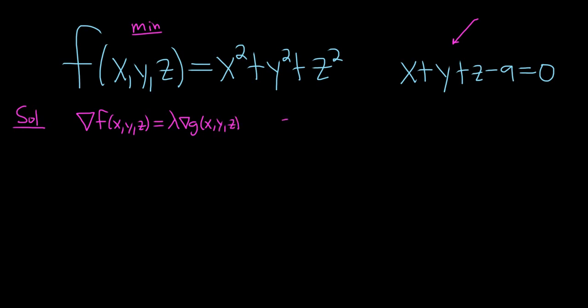And you also have to solve the constraint equation so g(x,y,z) equal to a constant. In this problem here this is our g and this is our constant so this is our constraint equation over here.